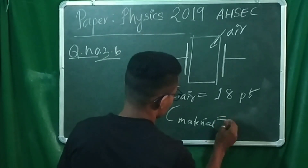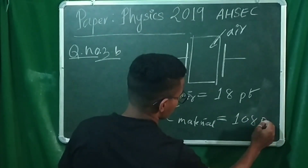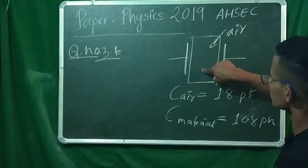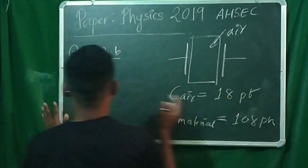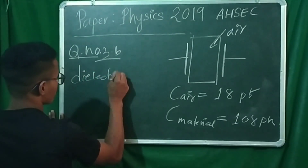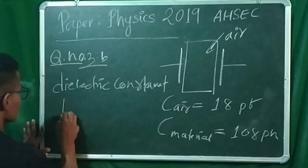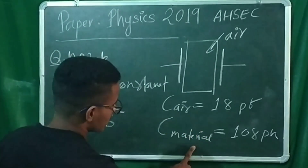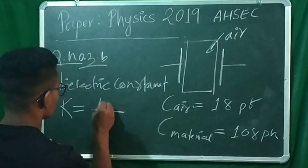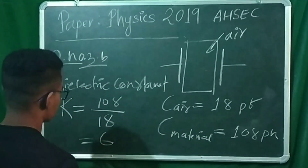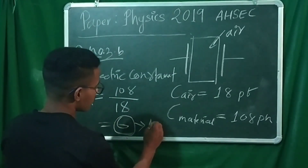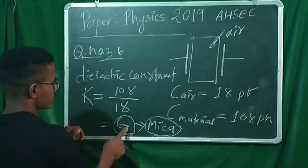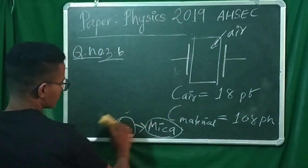The capacitor with air has capacitance C₀ equal to 18 pF. When the dielectric material is inserted, the capacitance becomes C equal to 108 pF. The dielectric constant k equals C divided by C₀, which equals 108 divided by 18, giving us k equal to 6. So the dielectric constant of the material is 6.